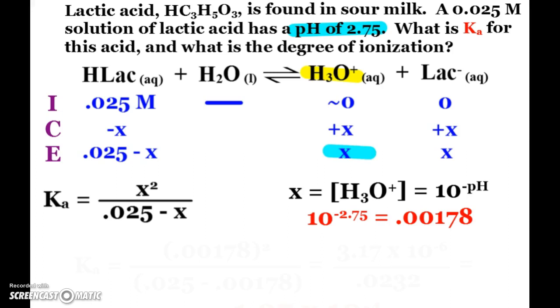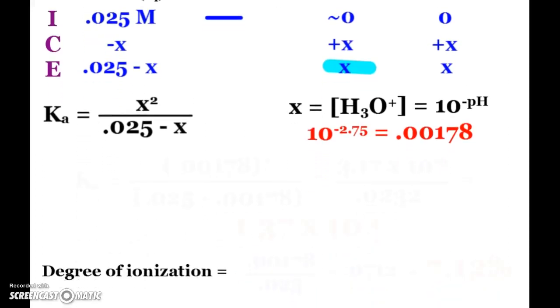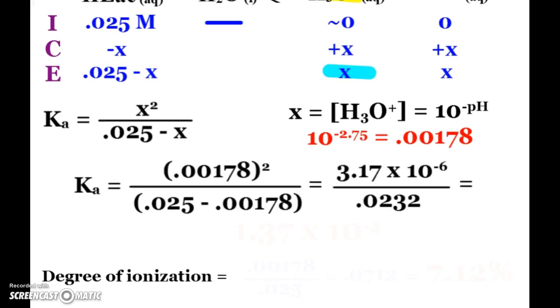Now it becomes plug and chug, and I plug away into my expression. So Ka is 0.00178 squared over 0.025 minus that. And so eventually, Ka is equal to 1.37 times 10 to the negative fourth. Of course, remembering what our K means, that means our reactants would be favored. Our weak acids and bases do not dissociate very much, so we expect small K values.